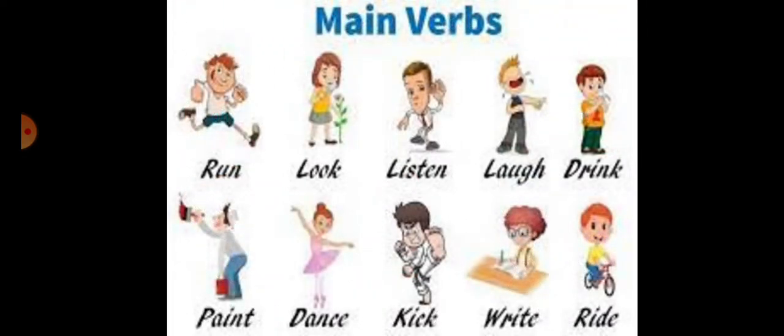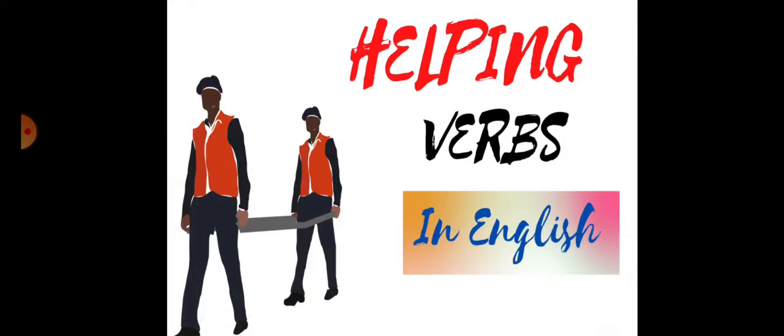Now, the action verbs we call them main verbs. It is telling you about how the different actions are going on. Each and every person who is in the picture is performing one or the other action: running, looking, listening, laughing, drinking, and so on. So all these are the action verbs, the main verbs.